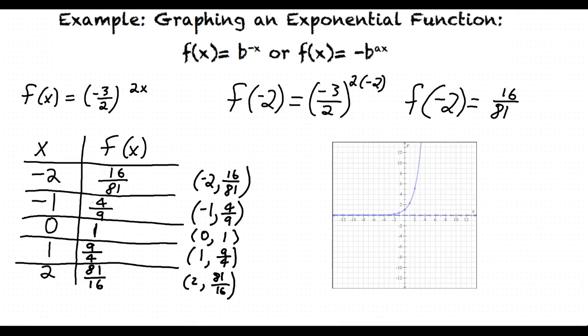After plotting the five ordered pairs, don't forget to draw the horizontal asymptote at y equals 0. Then click the graph button to connect the five points, which results in the answer shown here.